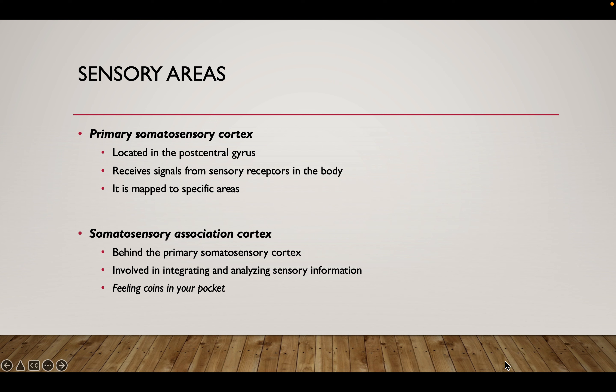The primary somatosensory cortex has a sensory homunculus — this kind of distribution of body parts and regions. Just like the motor homunculus, different body parts and regions are bigger than other parts, meaning that there is a greater concentration of sensory receptors there within that particular area.